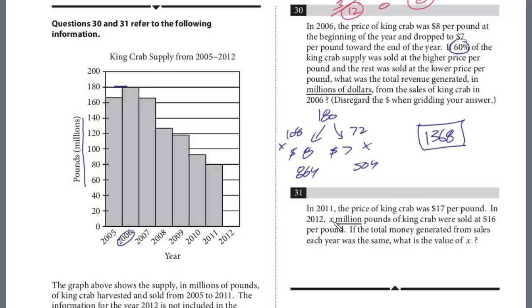In 2011, the price of king crab was $17 a pound. In 2012, X million pounds of king crab were sold at $16 a pound. If the total money generated from the sales each year was the same, what's X? So we just have to set these equal. We have both variables in 2011. So 2011, we look at the graph, is exactly 80 million pounds. And this is in millions again. So we know the revenue from 2011 is going to be 80, that's the millions of pounds, times 17.